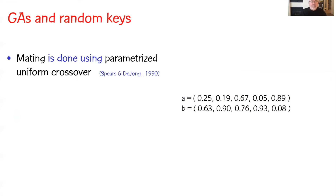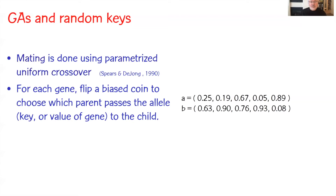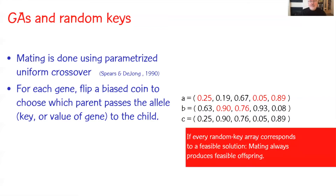Mating is done using parameterized uniform crossover. Given two parents, we produce a child by flipping a biased coin which decides which key the child inherits — heads, tails, tails, heads, heads — and now I have a child as a result of mating the two parents. If every random key array corresponds to a feasible solution, this type of mating always produces a feasible offspring.